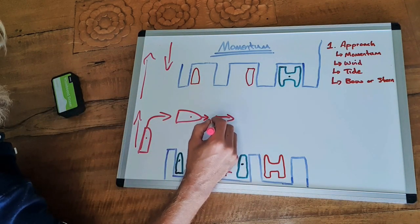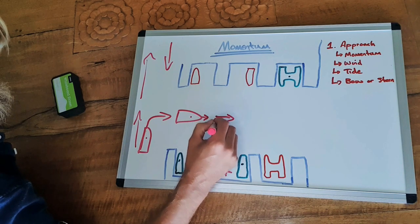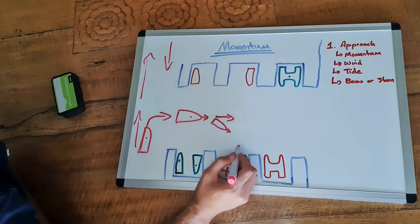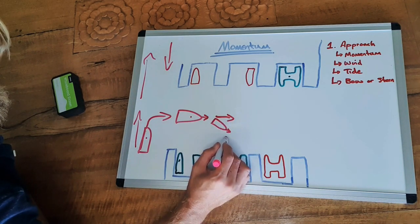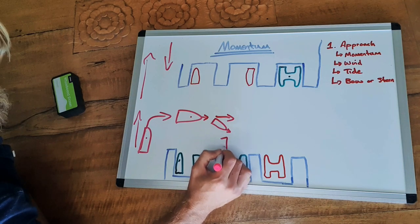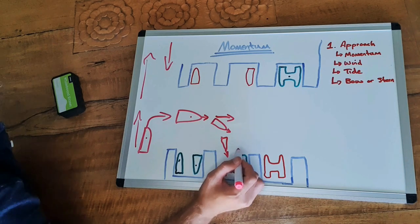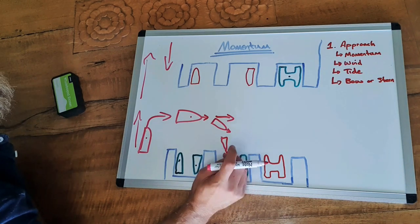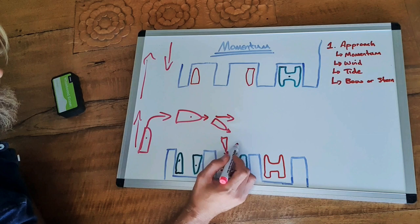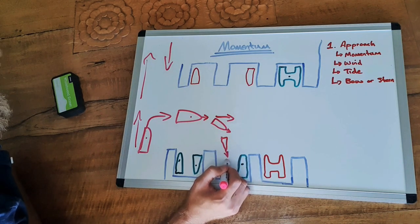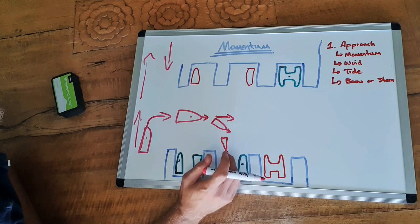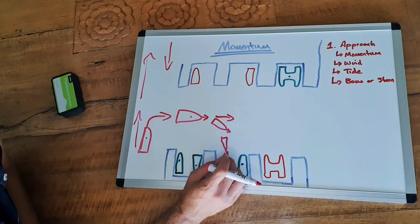But as we make our turn towards our berth, in this case going nose in, once we're on the approach, we've got momentum for a little while in a couple of different directions. So we have the engine and the rudder pushing us in the direction that the boat is headed.